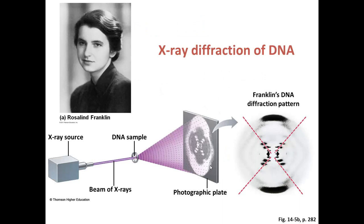The next major important finding came from Rosalind Franklin. Her work was done between 1951 and 1953, and she used a technique called x-ray diffraction. She took a beam of x-rays and focused them on a sample of DNA. This led to the diffraction of that x-ray beam, and that diffraction pattern could be captured on a photographic plate. This is a picture of the actual film that she got from this experiment, and what you can see is that this makes an x pattern.